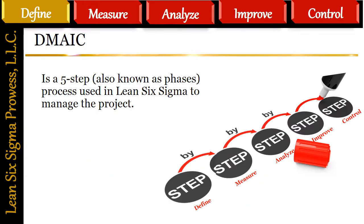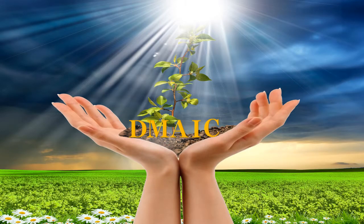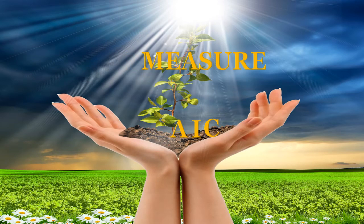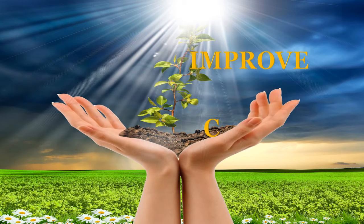DMAIC is a five-step, also known as phases, process used in Lean Six Sigma to manage the project. DMAIC stands for Define, Measure, Analyze, Improve, and Control.